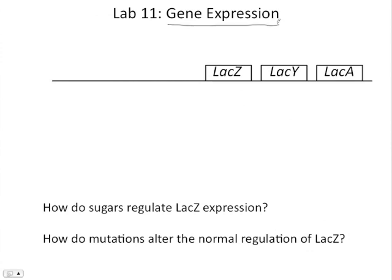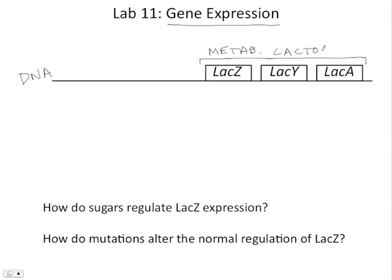Gene expression. We can say that a gene is being expressed when the information in that gene is being transcribed and translated to make a protein. This long line here on the diagram represents the DNA of an E. coli cell bacteria. And these boxes here are three genes — LAC-Z, LAC-Y, and LAC-A — and they have something in common. The products of these genes are enzymes which are involved in the metabolism of a molecule called lactose, a sugar molecule that the bacteria can use for energy.